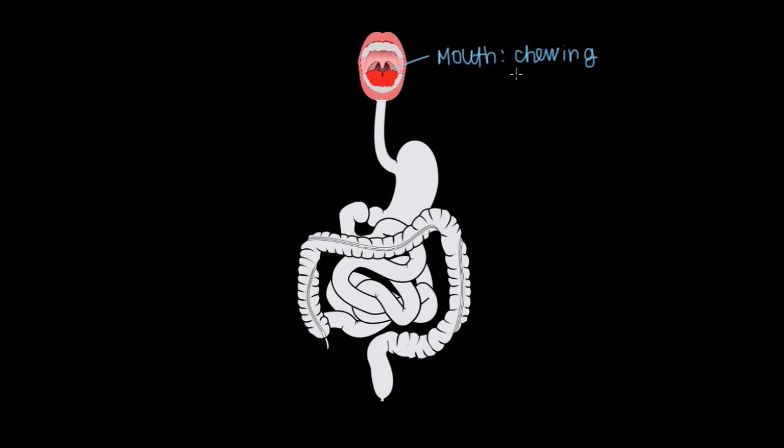Also very important is hydrolysis. As you might recall from biochemistry, hydrolysis is just the enzymatic digestion, or the enzymatic breakdown. Where chewing is the physical breakdown, hydrolysis is the enzyme-assisted breakdown of food. As we break down food, the goal here is to make what's called a bolus — just a sphere of digested food that can then be swallowed and passed on into our next structure.